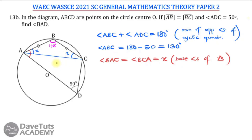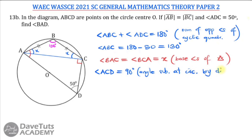We can also look at angle ACD. This angle ACD will be 90 degrees because it is the angle subtended at the circumference by the diameter AOD of the circle. So angle ACD is a right angle, 90 degrees.